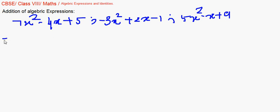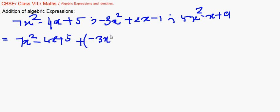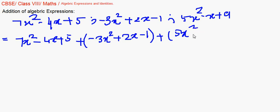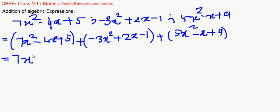So it becomes: (7x² minus 4x plus 5) plus (minus 3x² plus 2x minus 1) plus (5x² minus x plus 9). Let me put all of them in brackets. The first step is to remove the brackets, so let the first expression remain as it is.